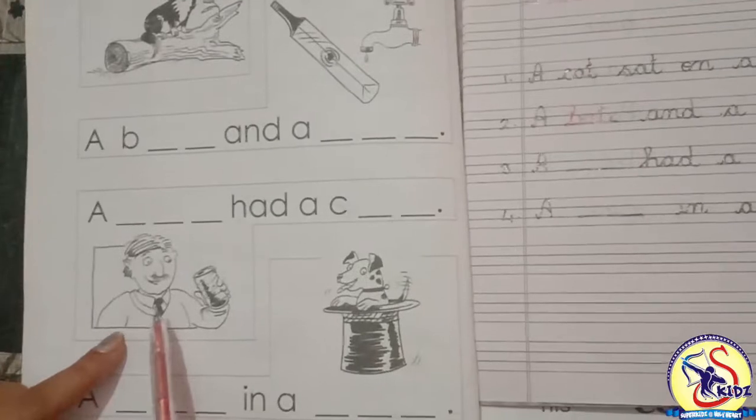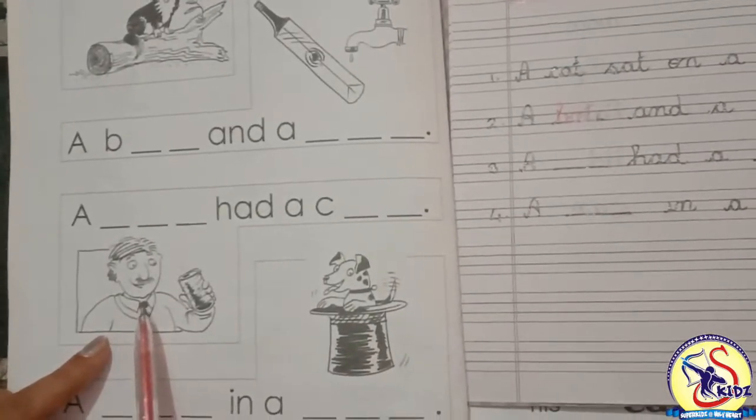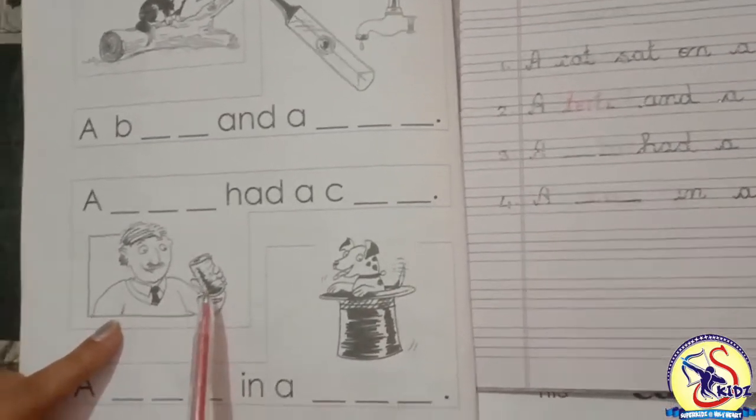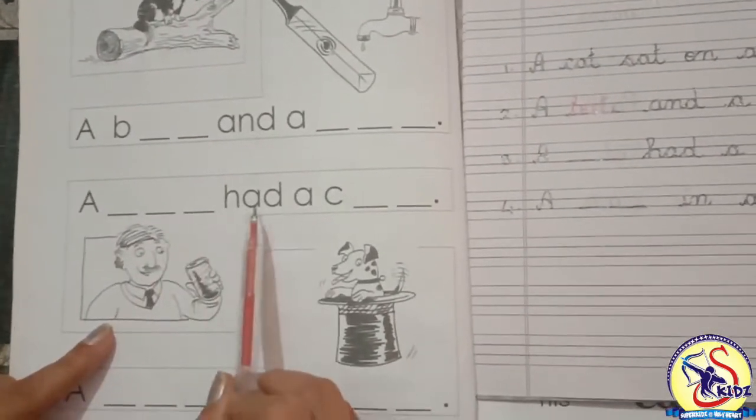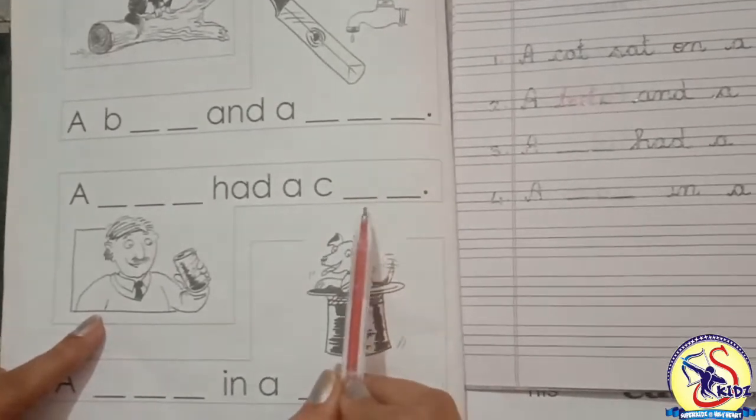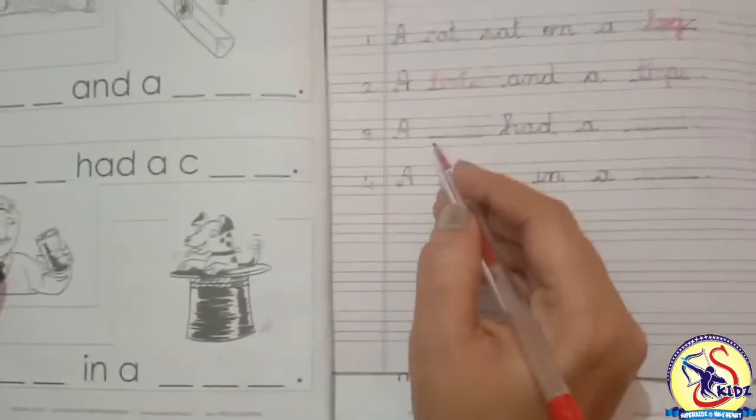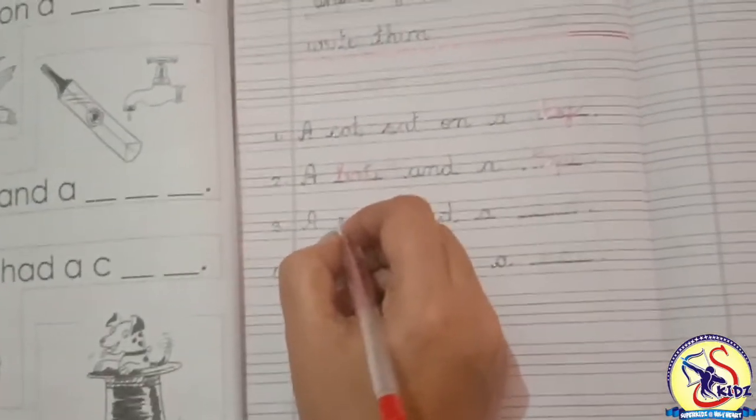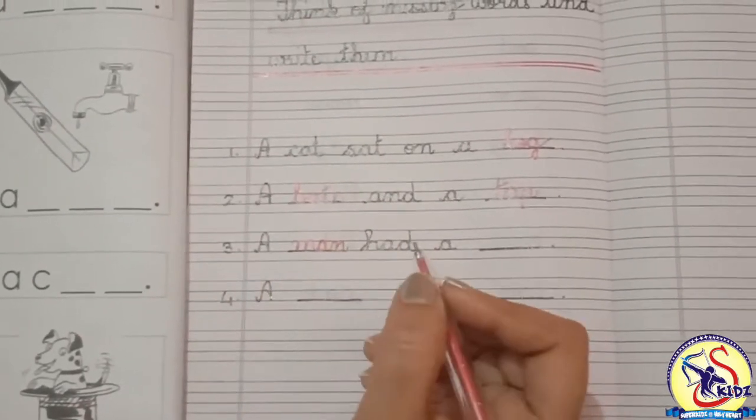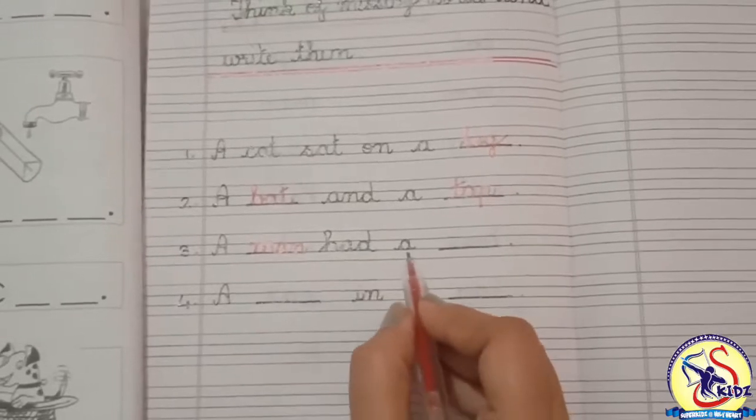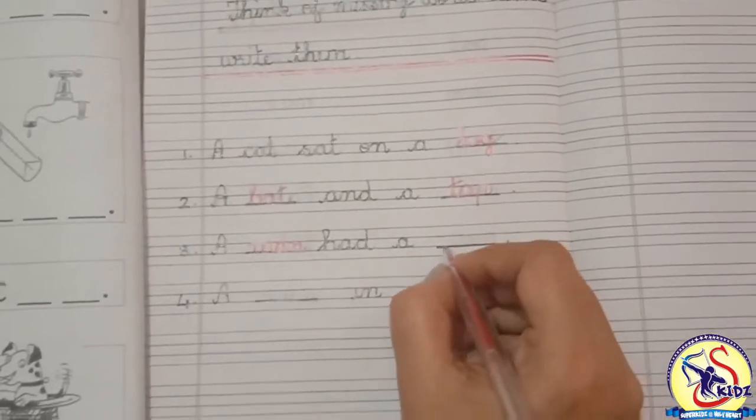Now see the next picture. This is the picture of a man who had a can in his hand. Now see the words: A blank blank had a blank. A man, M-A-N man, had a can, C-A-N can.